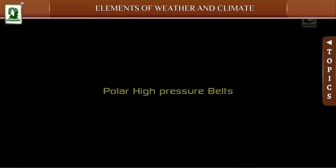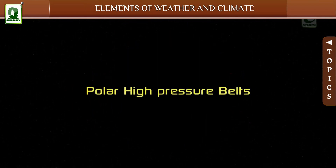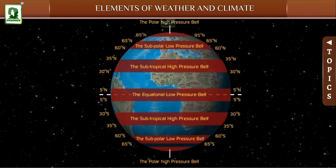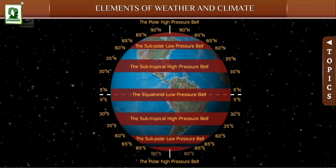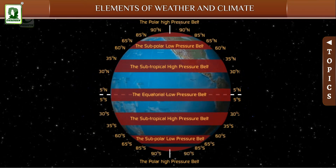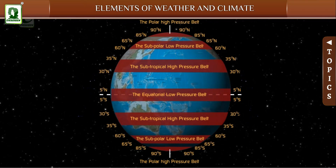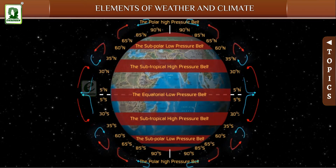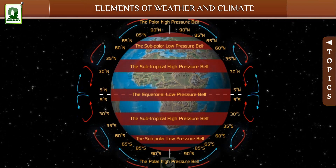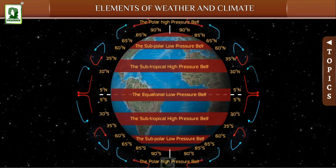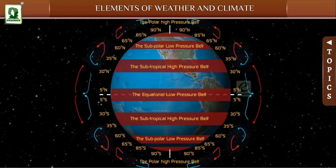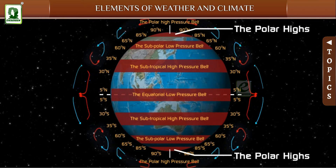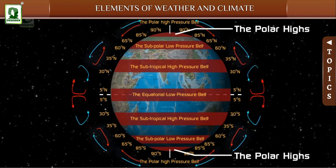At the north and south poles, between 85 and 90 degrees north and south, temperatures are always extremely low. The cold air sinks down and gives rise to high pressure over the poles throughout the year. These areas of polar high pressure are known as the polar highs, and these regions are covered by permanent ice caps.